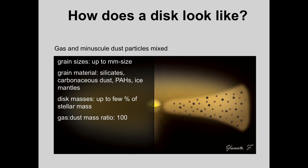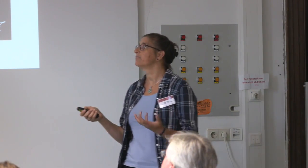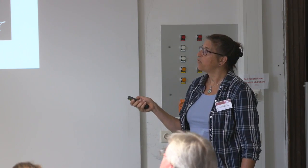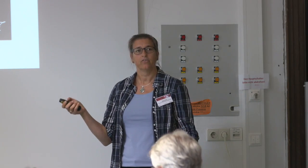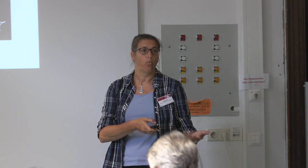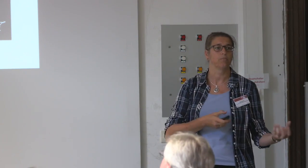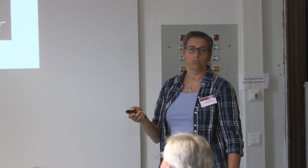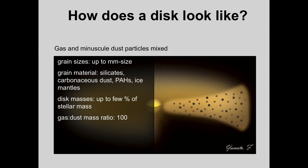Disk masses are up to a few percent of the stellar mass, and this relation holds all the way from M dwarfs to A-type stars across the whole stellar mass range. Meaning if we see less rotational braking in M dwarfs, since the disk-to-stellar mass ratio is constant, the disk should help brake the central star in the same way regardless of stellar type—so maybe the disks do not play a huge role in rotational braking.